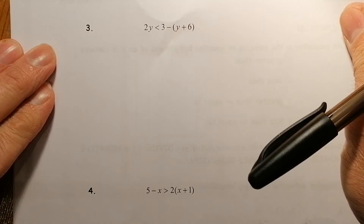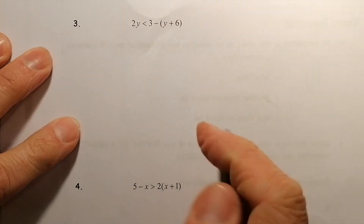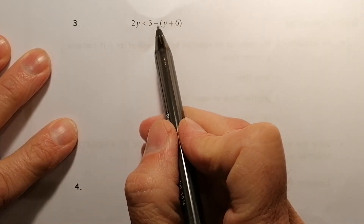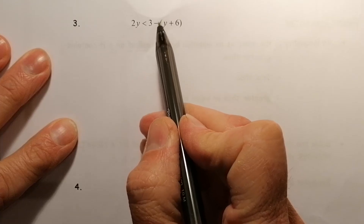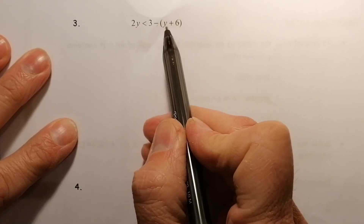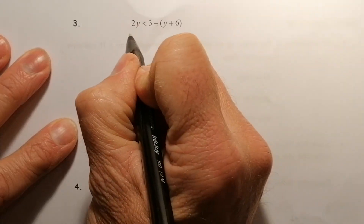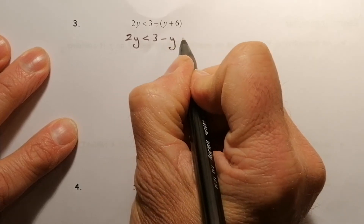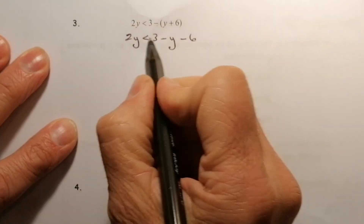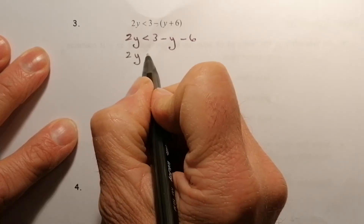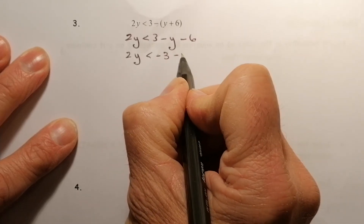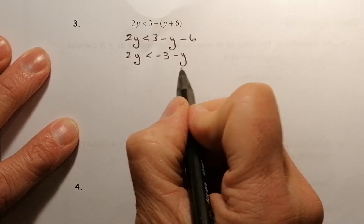Question 3: There's a negative outside the bracket, so treat it as negative 1, and multiply the bracket out by negative 1. So I get 2y is less than 3 minus y minus 6. Gathering the numbers together: 3 minus 6 is minus 3, so 2y is less than minus 3 minus y. Now I want to get rid of the minus y, so I add y to both sides.